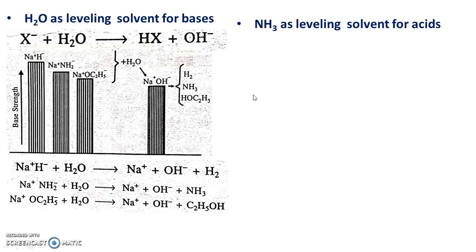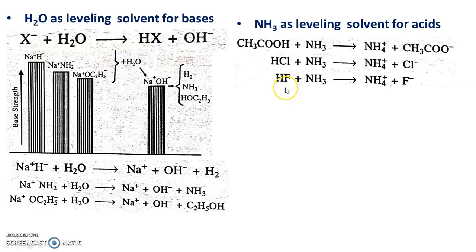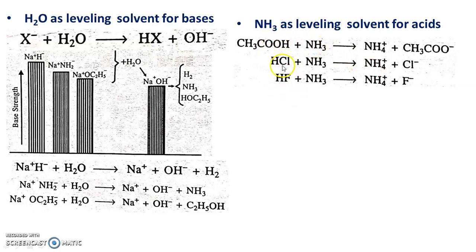All these acids ionize almost completely in liquid ammonia and form NH4+. For example, when acetic acid is added in liquid ammonia, H+ gets transferred to ammonia giving NH4+ and CH3CO-. HCl also transfers a proton to form NH4+, and HF also transfers a proton to form NH4+. Since the acidity of the solution depends on the concentration of NH4+, these three acids produce NH4+ equally and are therefore leveled.